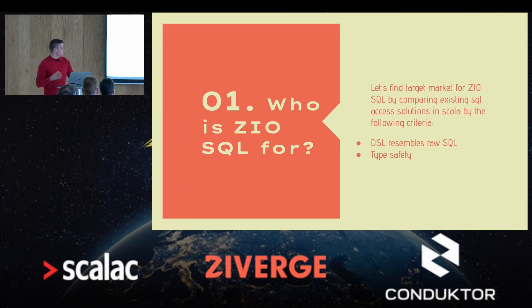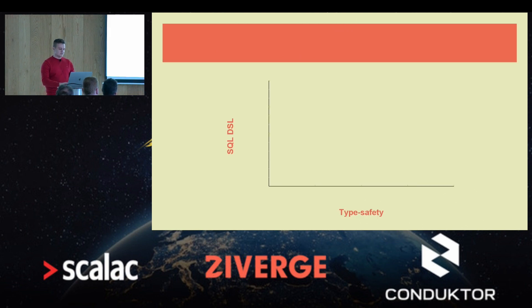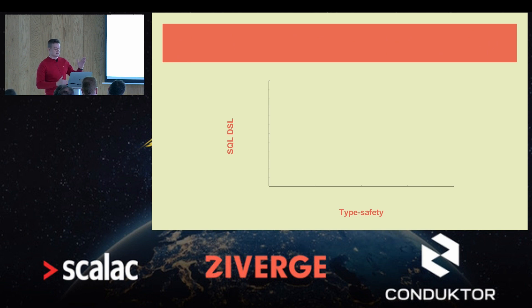Let's start by trying to find a target market for this new library. We'll do that by comparing existing SQL access solutions in Scala in terms of two criteria: whether they offer a typesafe DSL, and whether their DSL resembles writing SQL. To visualize this, I created a graph where the X axis represents type safety and the Y axis represents SQL-looking DSL.